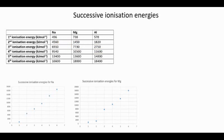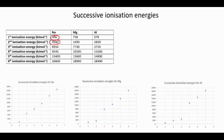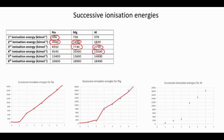It's actually clearer to see these big jumps if you look at the graphs. So there's sodium, there's magnesium, and there's aluminium. For sodium, it increases a little bit and then jumps up massively between 1 and 2. For magnesium, it goes up a little bit and then jumps massively between 2 and 3. And for aluminium, it kind of goes up steadily and then jumps massively between 3 and 4.